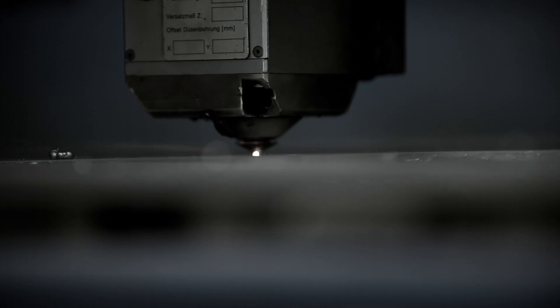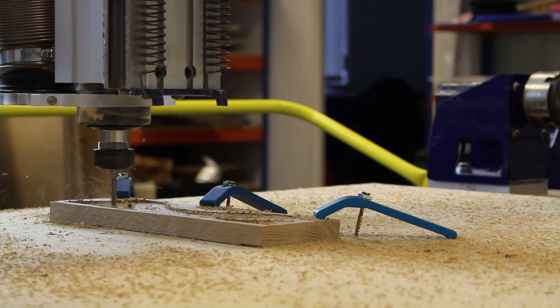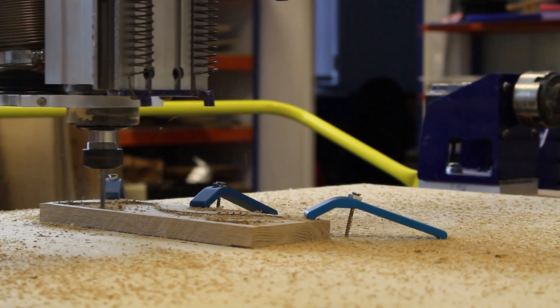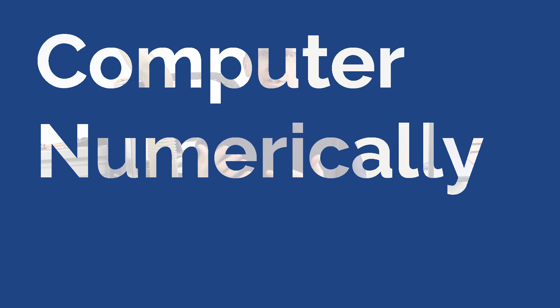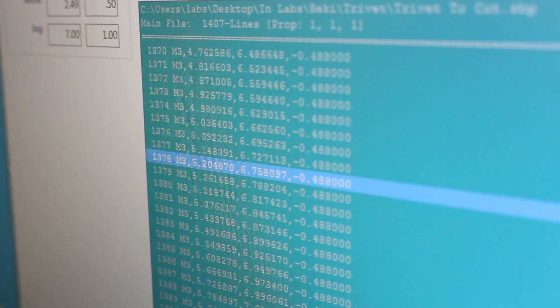The term CNC is a generic term which can be used to describe many types of machines — for example laser cutters, vinyl cutters, milling machines and many others. CNC stands for computer numerically controlled and basically means that the physical movements of the machine are controlled by instructions such as the coordinate positions that are created using a computer.